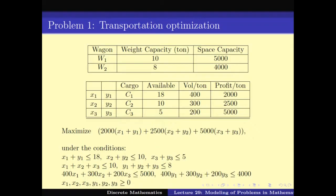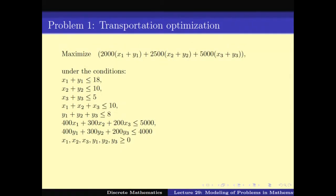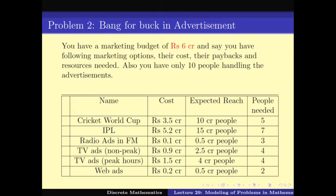Once we solve the LP using LP solvers, we get an optimum solution for this problem. We can assume x1, x2, x3, y1, y2, y3 are real numbers, so this can be solved using LP solvers. We have seen how we can model this problem using LP and then use the standard tools of LP solvers to solve it. In the next video, we will be looking at the second problem and how one can use linear programming to solve it. Thank you.